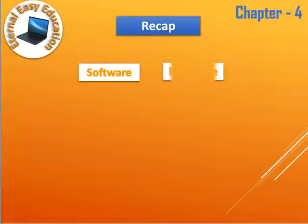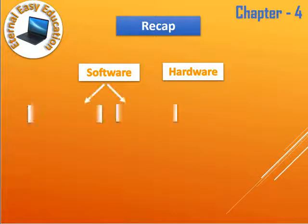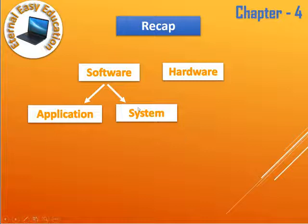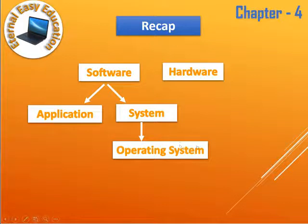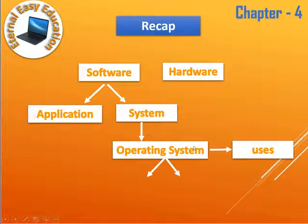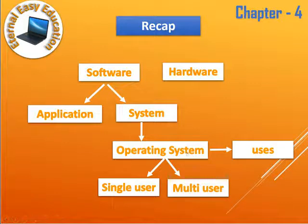To summarize: software is a set of instructions; hardware is physical components; both combined form a computer; and the OS combines software and hardware. Software has two types — application and system — and the operating system is a type of system software. Based on processing capability, operating systems are divided into single-user and multi-user systems. Thank you, have a good day.